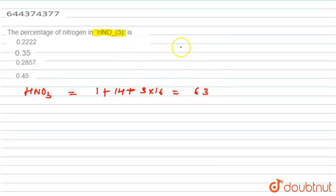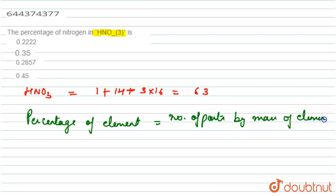And the percentage of an element - percentage of element - it is equal to number of parts by mass of the element divided by molar mass of compound.